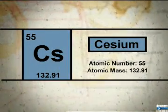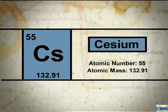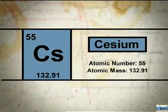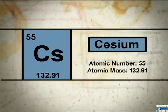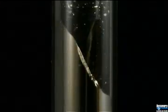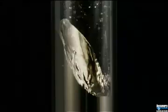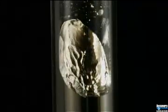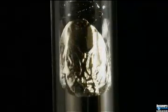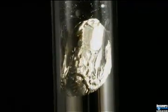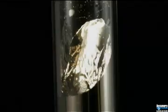Element number 55 on the periodic table is cesium. The atomic symbol for cesium is CS. Cesium is a pliable silver-white metal. It is the most alkaline of all the elements and one of only three metals, along with mercury and gallium, that are liquid at room temperature.